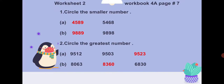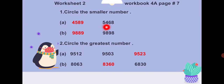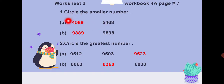Page number seven, workbook 4A, worksheet number two: circle the smaller number. Part A — you have four thousand five hundred and eighty-nine versus five thousand four hundred and sixty-eight. Compare from the left: thousands place is four versus five. Four is smaller, so four thousand five hundred and eighty-nine is the smaller number — circle it.